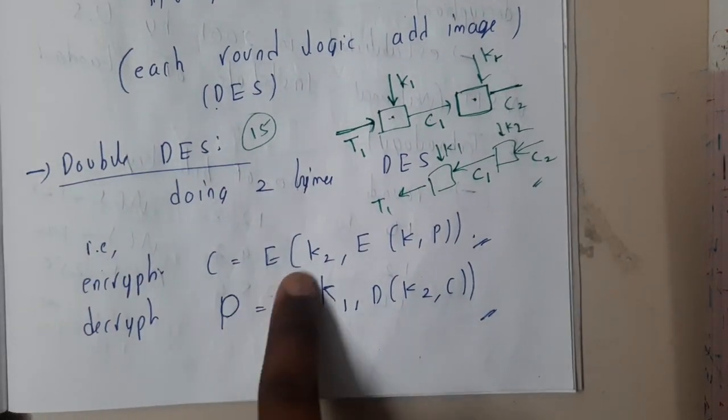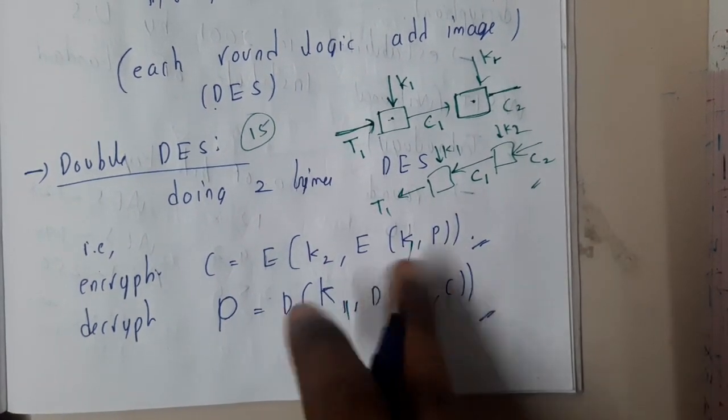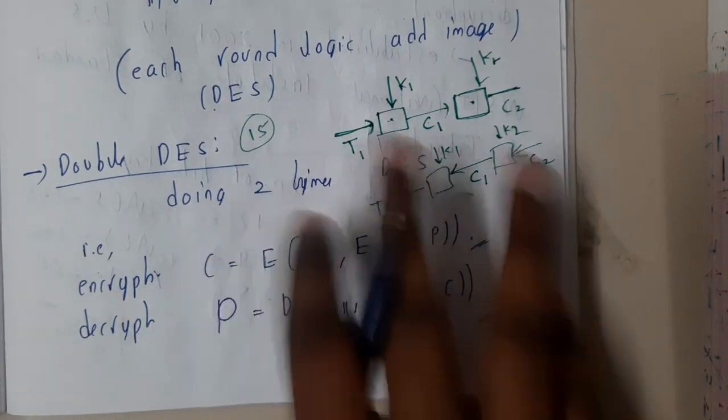That's what I have written here. If you observe, initially with the key K1 it is done, later on with K2 done. Decryption: initially with K2 done, then with K1 done.